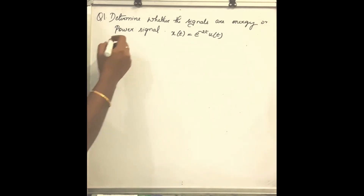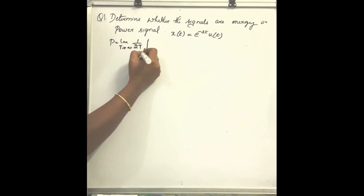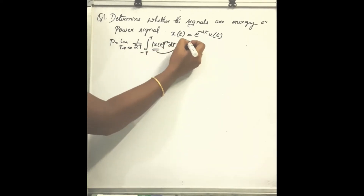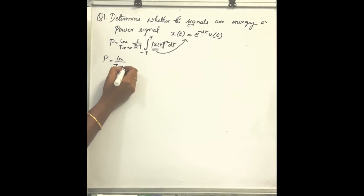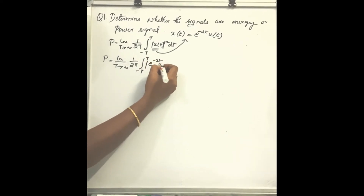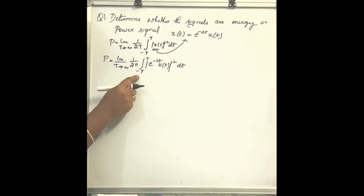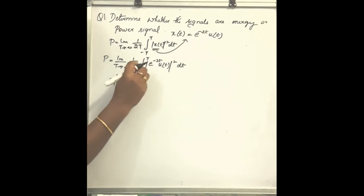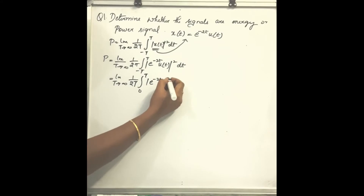Next, to find the power, the formula is P equals limit t tends to infinity of 1 by 2t, integral from minus t to t of x(t) whole square dt. Substituting x(t) = e^(-2t) u(t) gives limit t tends to infinity of 1 by 2t, integral from minus t to t of e^(-2t) u(t) whole square dt. Removing u(t) changes the limits from 0 to t, giving limit t tends to infinity of 1 by 2t, integral from 0 to t of e^(-4t) dt.